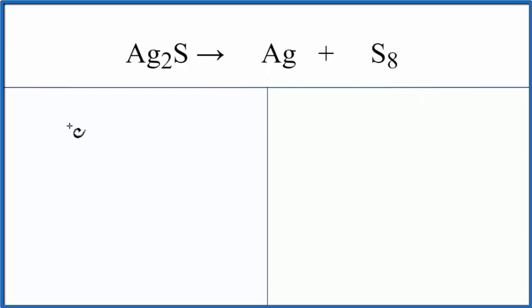Let's count the atoms up on each side. Silver, we have two of those, and then sulfur, we have one.